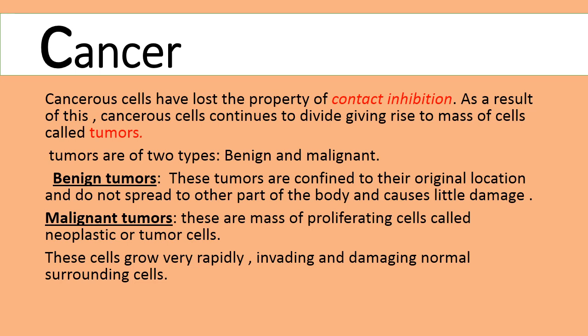So what is meant by cancer? Cancer is a kind of disease that takes place because of the abnormal growth of cells in any part of the body. Now let us understand what is meant by abnormal growth and which cells grow abnormally. Normal cells in our body exhibit a property called contact inhibition, and because of this property, normal cells divide normally and can control the uncontrolled growth of adjacent cells.